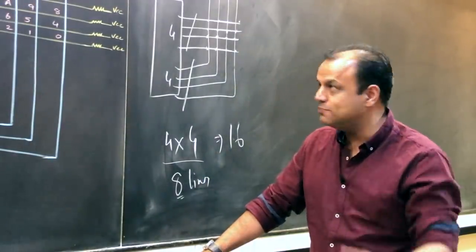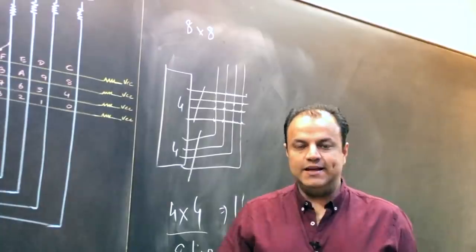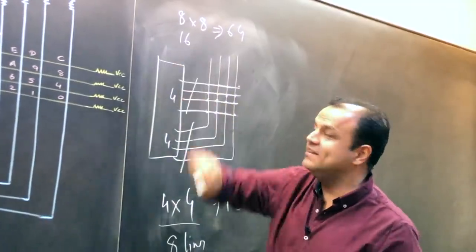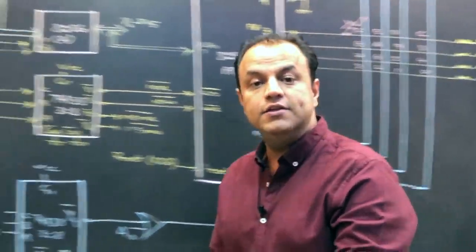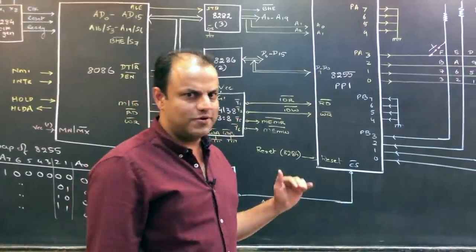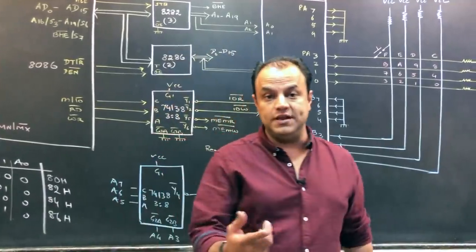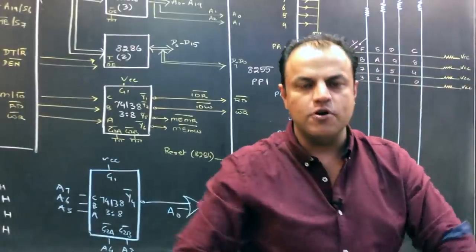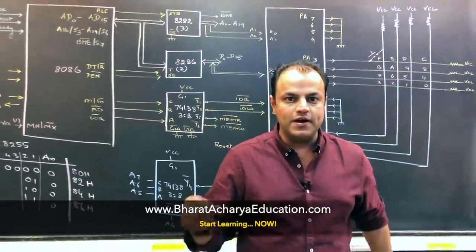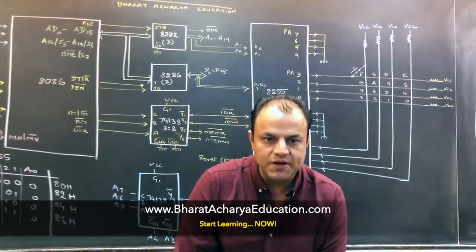If you use an eight into eight keyboard, you're using eight plus eight, 16 lines, but you're getting 64 intersecting points which will give you 64 keys using only 16 lines. A 16 into eight keyboard will give you 128 keys using only 24 lines. 8255 has three ports: port A, port B, port C. Each port is eight bits, so using 24 lines, 16 lines as rows and eight lines as columns, you can connect 128 keys using a single 8255. Otherwise you would have required 128 lines. That's the advantage of a matrix keyboard.